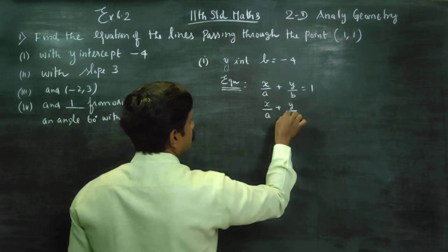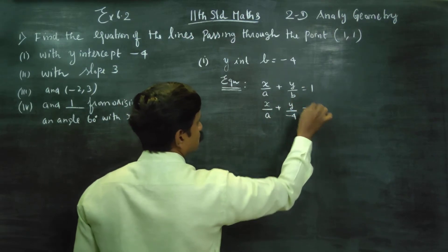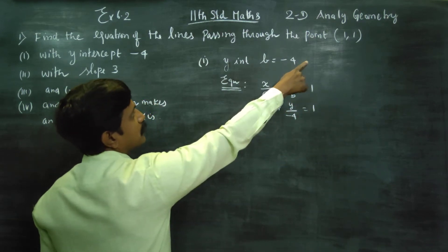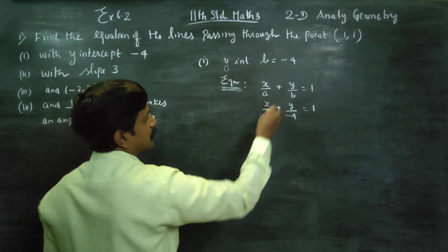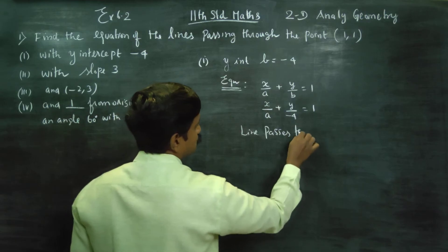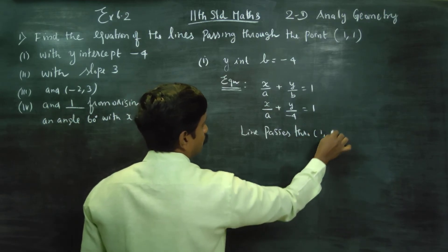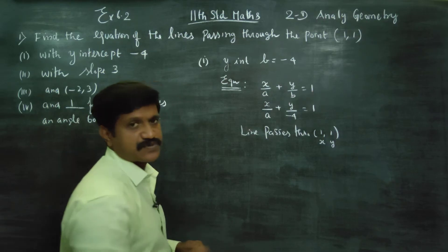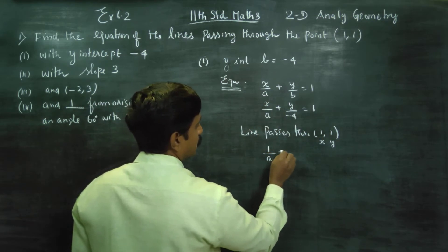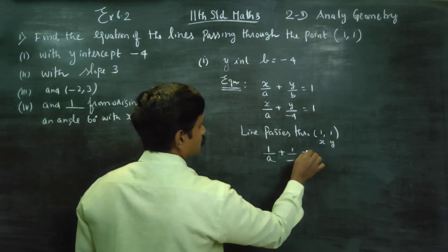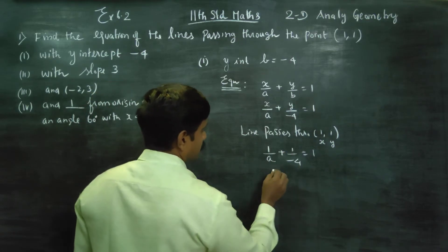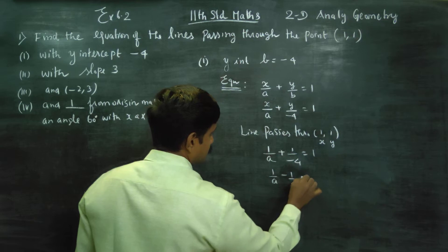The intercept form is x/a + y/b = 1. But the straight line passes through (1, 1). Substituting x = 1, y = 1 into x/a + y/b = 1, we get: 1/a + 1/(−4) = 1. Taking LCM, this becomes 1/a − 1/4 = 1.